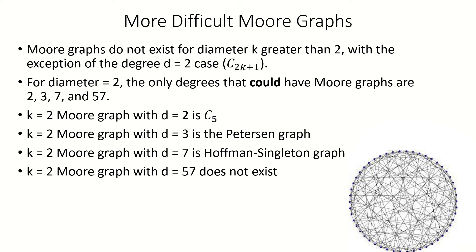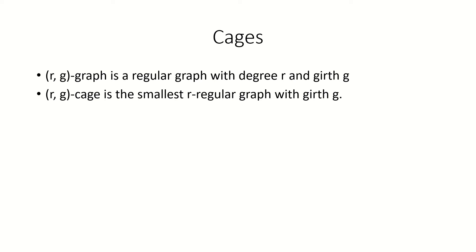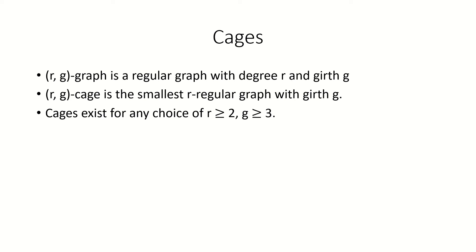I mentioned at the start of the video that we'd discuss cages and their relationship to Moore graphs, so let's do that now. First, we'll need the concept of an (r,g)-graph. An (r,g)-graph is a graph whose vertices all have degree r and whose shortest cycle has length g. An (r,g)-cage is the (r,g)-graph with the fewest vertices — it's the smallest graph with a given girth and degree. It's known that there exists a cage for any choice of parameters r and g, as long as r is at least 2 and g is at least 3. What's the theoretically least possible number of vertices for an (r,g)-graph? The answer will give us a lower bound for the number of vertices in an (r,g)-cage.